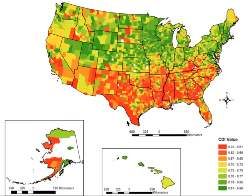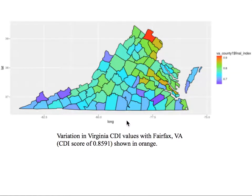The distribution map of the CDI shows geographic variation between counties, with green representing high development and red representing low development. This map shows the variation in Virginia's CDI values. Fairfax, Virginia is shown in orange with a CDI score of 0.85.